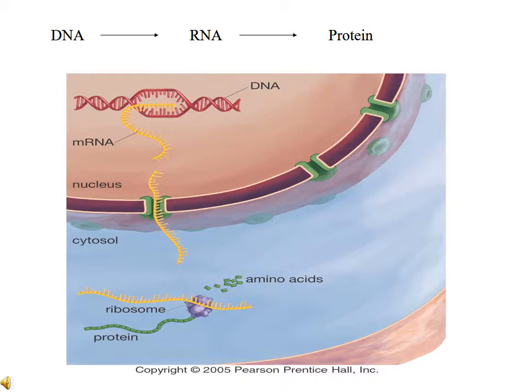This messenger RNA has the information necessary for making the appropriate protein, insulin. This messenger RNA — shown as a yellow strand — is moved outside the nucleus through nuclear pores into the cytoplasm. In the cytoplasm, the messenger RNA will bind itself to something we refer to as a ribosome, which is basically a protein factory. As the messenger RNA binds itself to the ribosome, the ribosome is able to read that information on the messenger RNA and, through the process of translation, translate that information into a protein molecule.